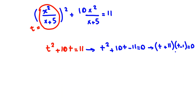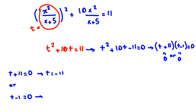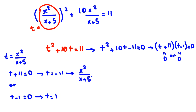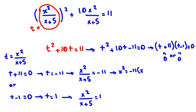From the factorization, either t plus 11 equals zero giving t equal to negative 11, or t minus 1 equals zero giving t equal to 1. Substituting back using t equals x squared over (x plus 5): Case 1 gives x squared over (x plus 5) equal to negative 11, and Case 2 gives x squared over (x plus 5) equal to 1.